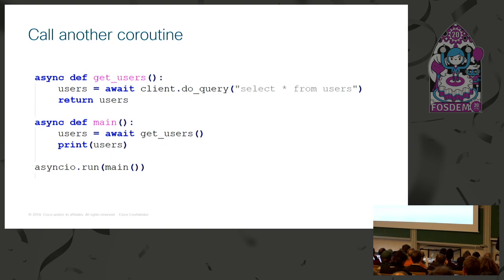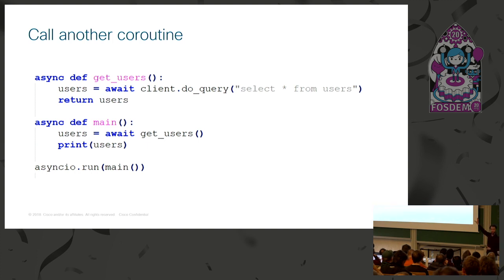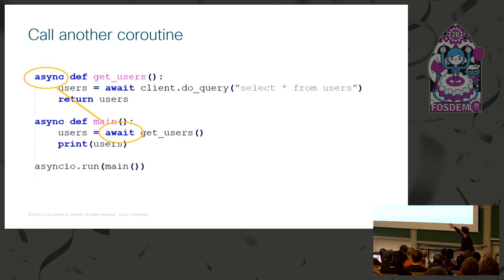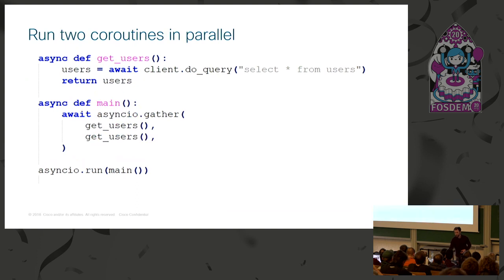We can also use await to call another coroutine. Here we have a main function and a get_users function. The main function calls get_users, but since it's an async function, calling it without await gives you a coroutine object, not the result. You need to use await in front of it to get the actual result. The await keyword is very often used to await the outcome of another coroutine. At the very bottom, asyncio.run is how you start an asyncIO program — it starts an event loop that operates the coroutines.